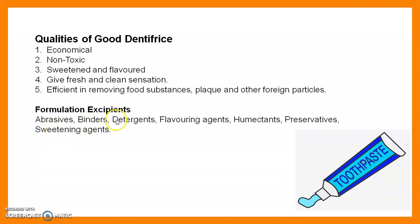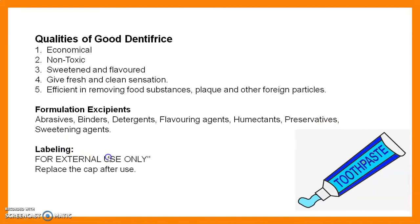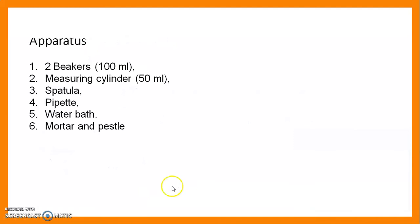The formulation and excipients used in toothpaste are: abrasive agents, binders, detergents, flavoring agents, humectants, preservatives, and sweetening agents. The label should contain a secondary label stating 'For external use only' and 'Replace the cap after use.'